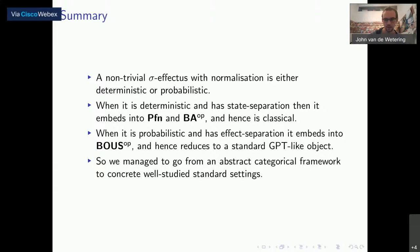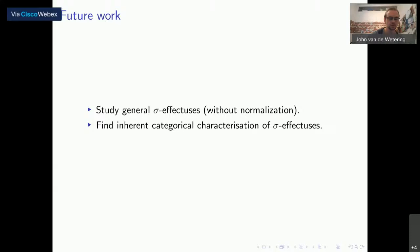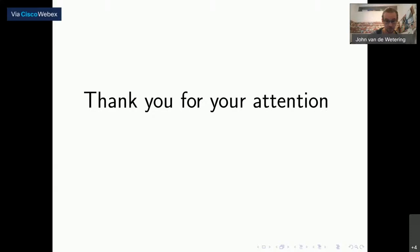Some future work: we'd like to study general sigma-effectuses where we don't assume normalization. For instance, there is work studying settings where the probabilities are over a space — so the probability of something holding can differ depending on your point in spacetime — and if you allow more general scalars you can also do this in effectuses. There's also an inherent categorical characterization of normal effectuses that doesn't really work with sigma-effectuses, so it would be nice to find a clear categorical characterization of sigma-effectuses. Okay, that was all I wanted to tell you. Thank you for your attention.